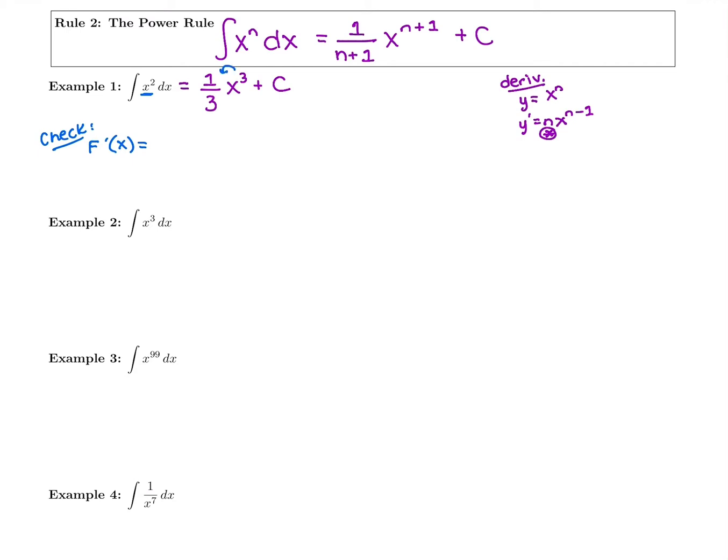We're going to bring down the power here. We're going to have 1 third, our constant, multiplied by 3, our power, and then we subtract 1 from the new power, which is 2, and then taking the derivative of c is just 0. So when we take the derivative, we get 1 third times 3x squared. Those 3s will cancel. We get back to x squared, exactly what was in the integrand. So yes, this rule works. Add 1, put it as your power, and then make sure you divide by that new power too.